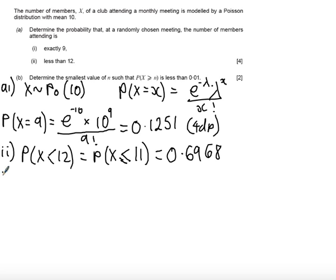Part B can be a little bit confusing sometimes. It says determine the smallest value of N such that P(X ≥ N) < 0.01. If we use the way we read our tables and use a little bit of algebra, it should make life easier.